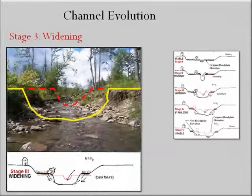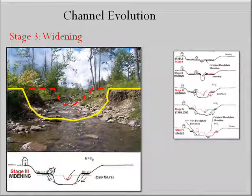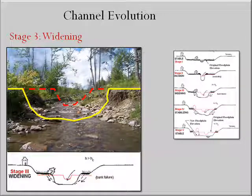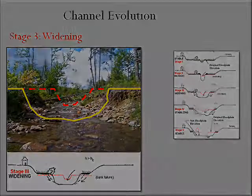Stage three of the evolution process is the widening stage, in which the river banks, having increased to a critical height due to the incision process, begin to fail, resulting in a widening of the channel and an increase in sediment inputs, both of which result in decreased ability of the flow to transport the sediment load.